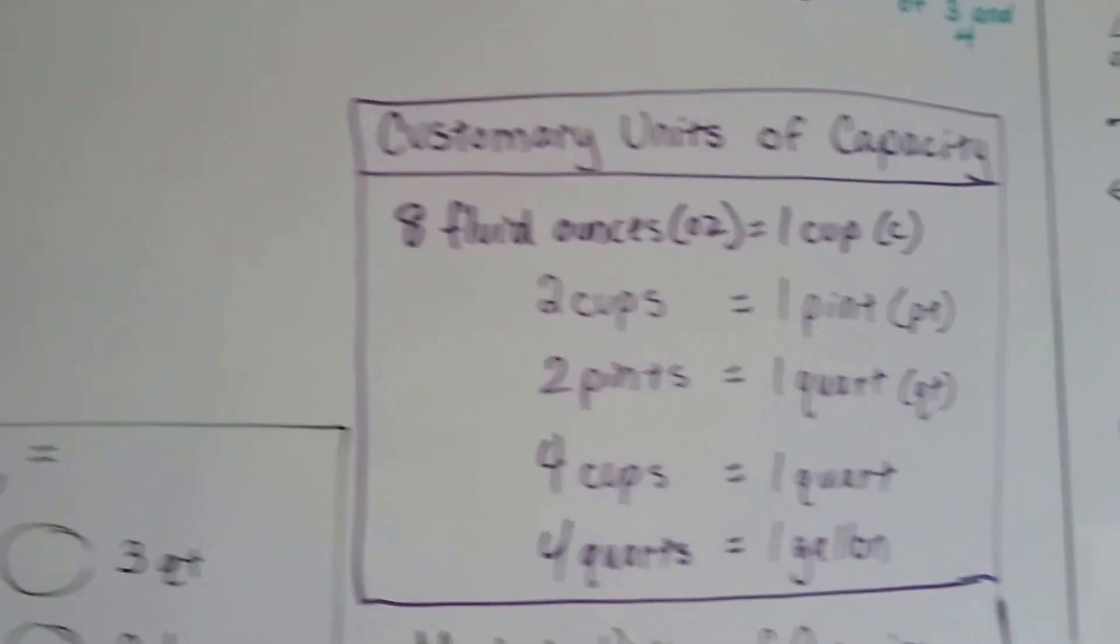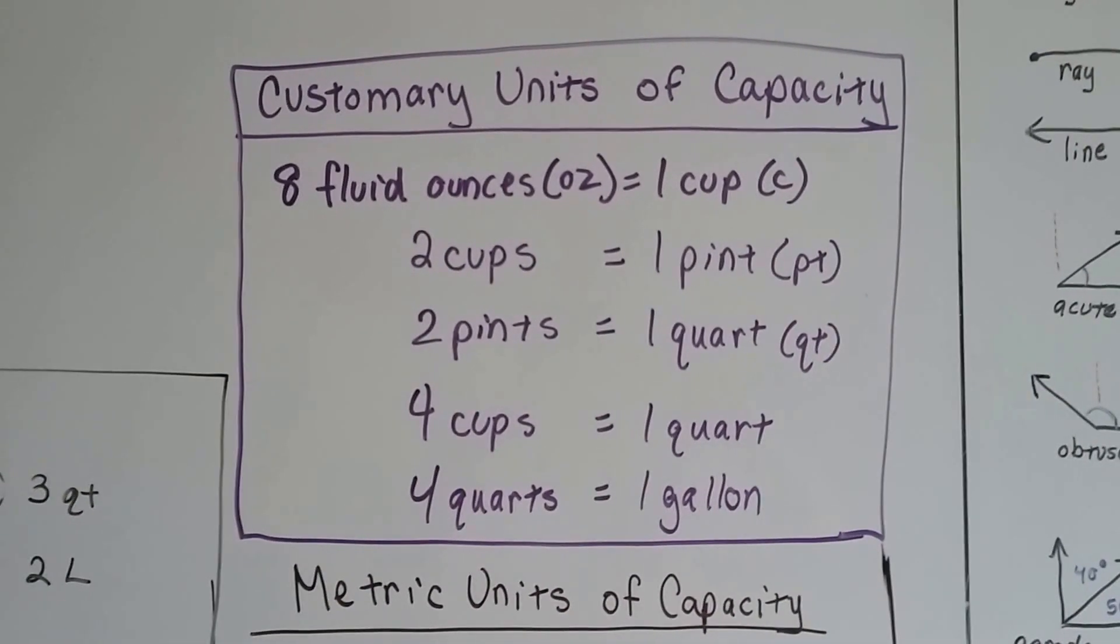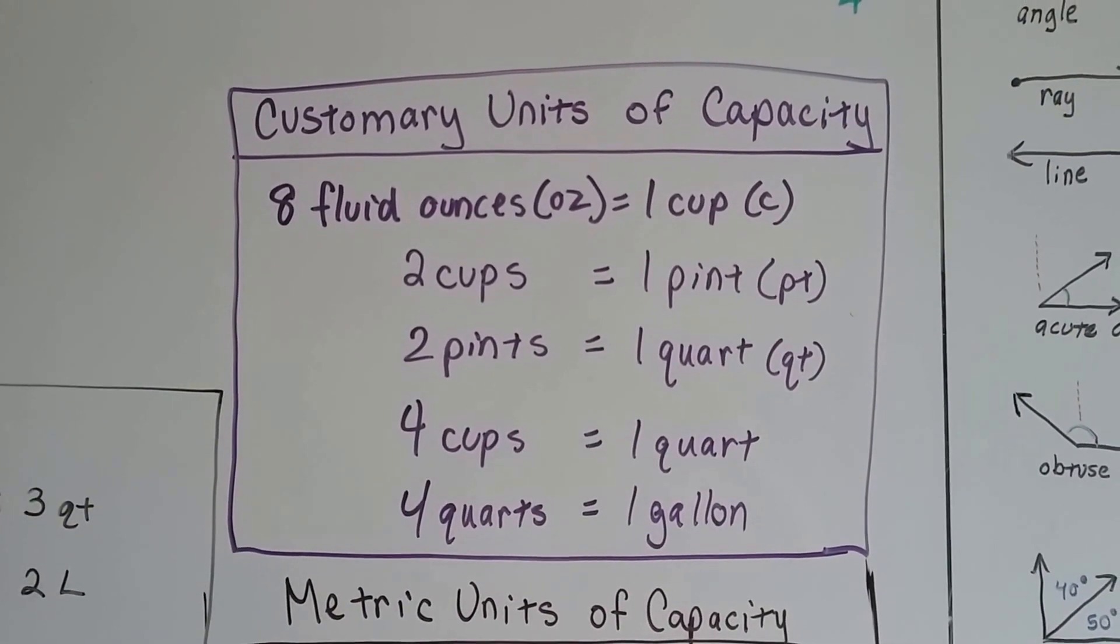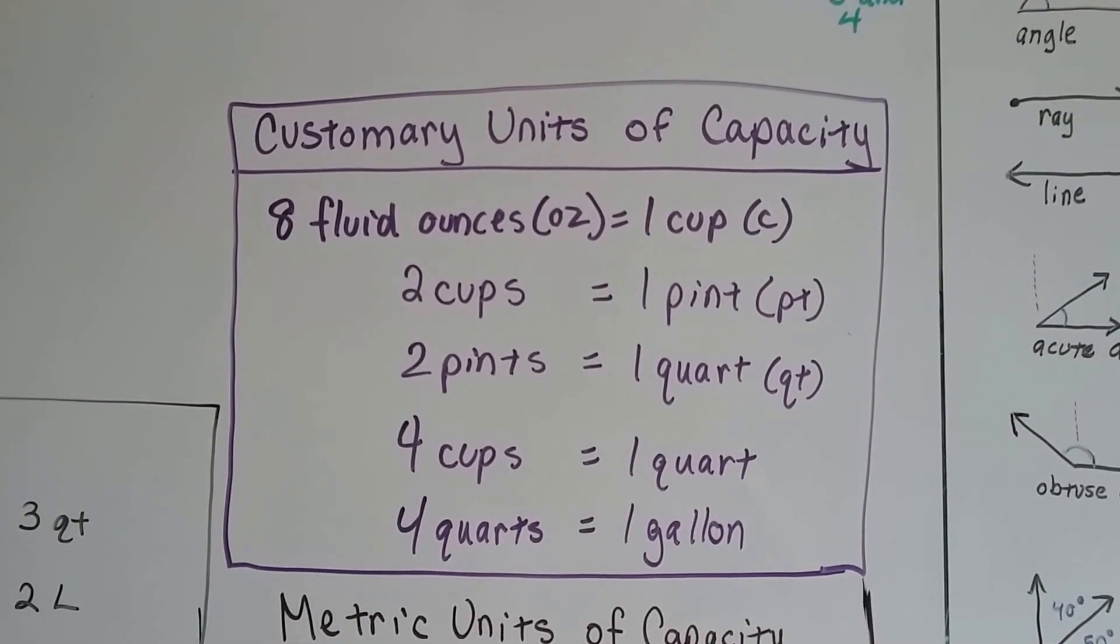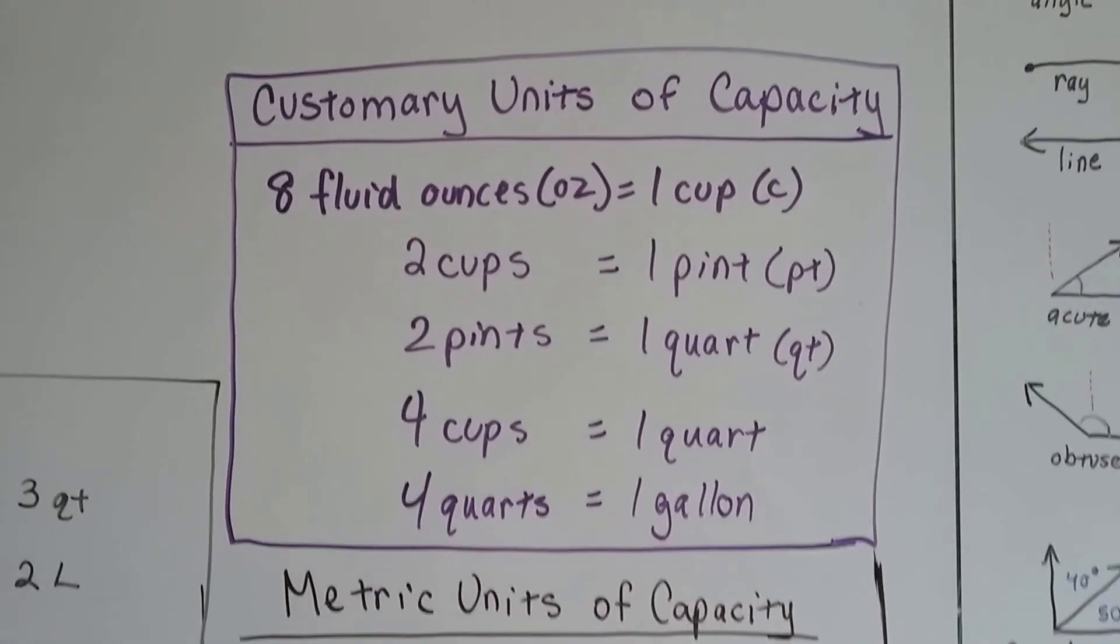The customary units of capacity are fluid ounces, cups, pints, quarts, and gallons. So 8 fluid ounces is a cup, 2 cups equals 1 pint, 2 pints equals 1 quart, 4 cups is a quart, and 4 quarts are a gallon.